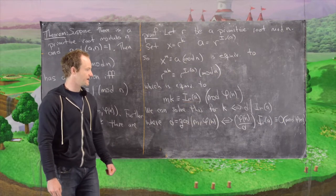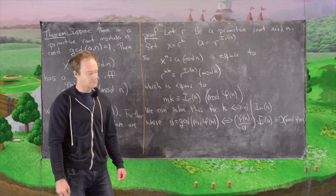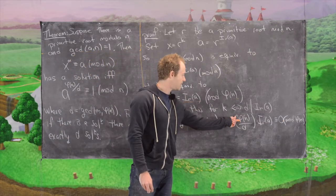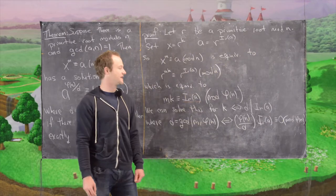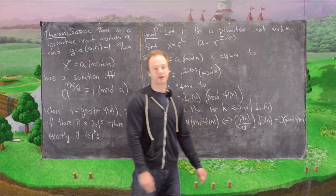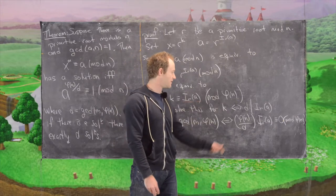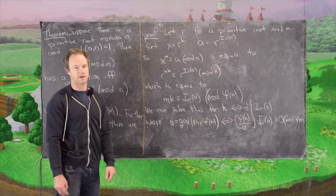Let's unpack that. If we take phi of n times i_r(a) divided by d, that'll be the LCM of phi of n and i_r(a), which is a multiple of phi of n, making it 0 mod phi of n.